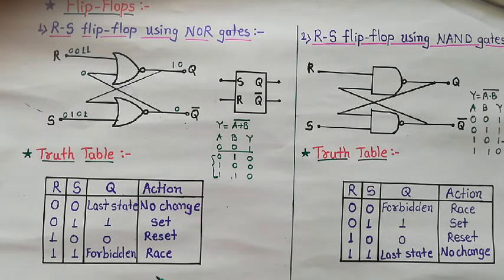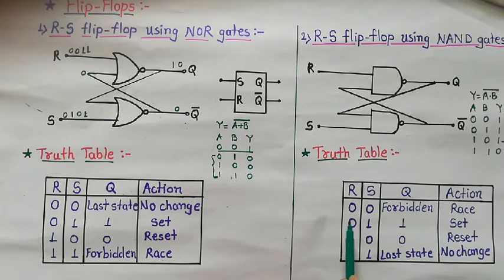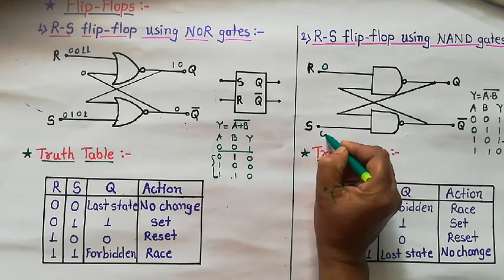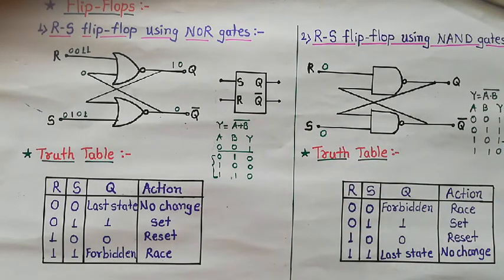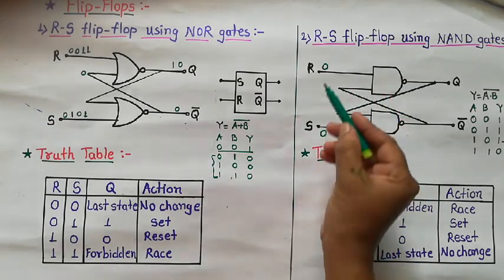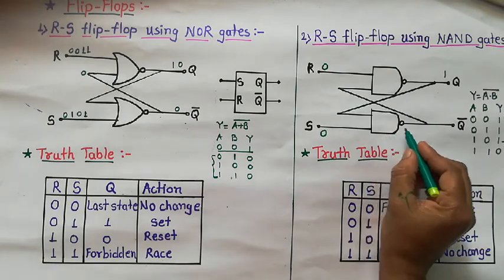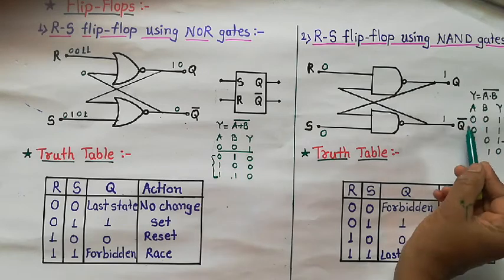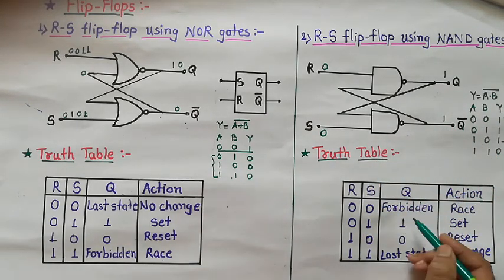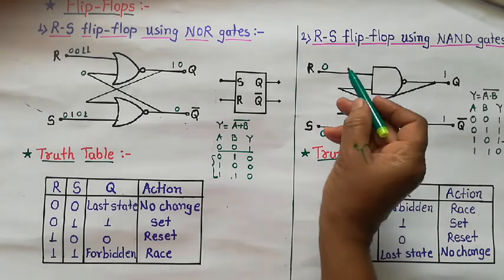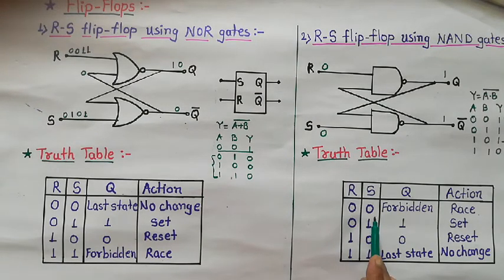This is the truth table for RS flip-flop by using NAND gate with four conditions. First condition: if R=0 and S=0, then one input to the upper NAND gate is low, so Q equals 1, and one input to the lower NAND gate is also 0, so the output of the lower NAND gate is also 1. Q and Q bar are both equal to 1 — this is undesirable. So when R=0 and S=0, this is the forbidden condition and the flip-flop enters the race condition.